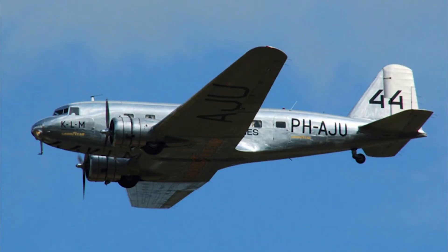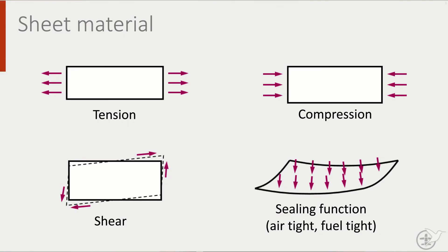As aircraft design evolved, a shift occurred from fabric covered trusses to metal sheets which had load bearing capability. The advantage is that sheet material can also carry shear, whereas the diagonal rod or wire can only perform its function in tension or compression.